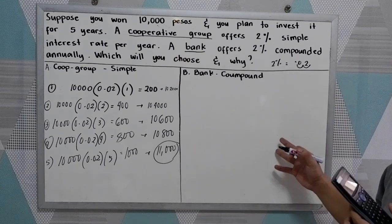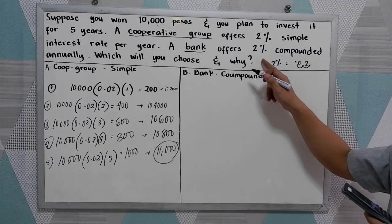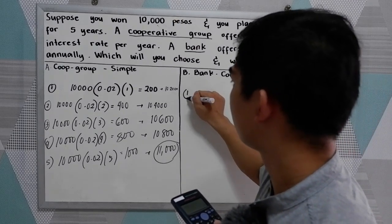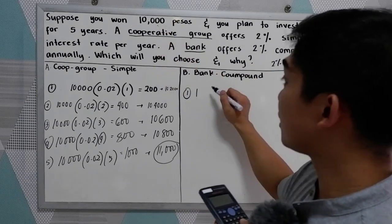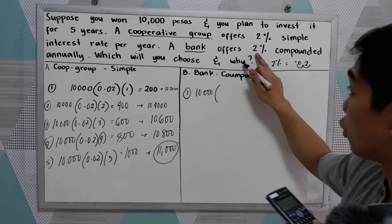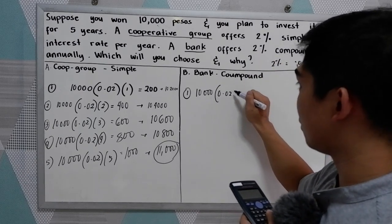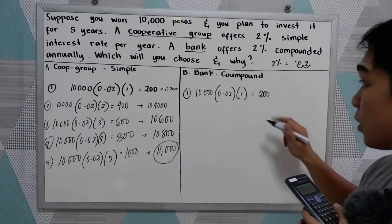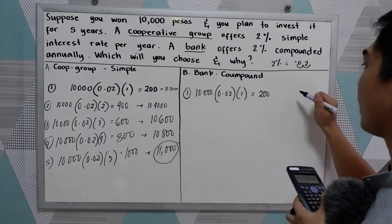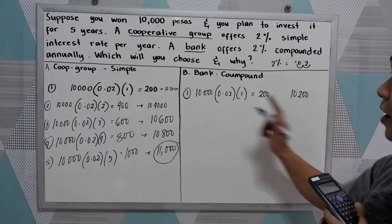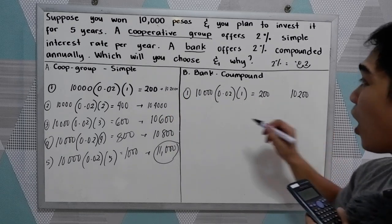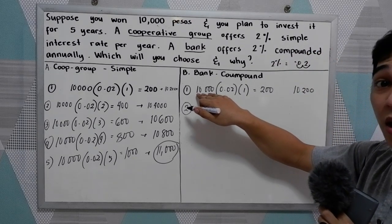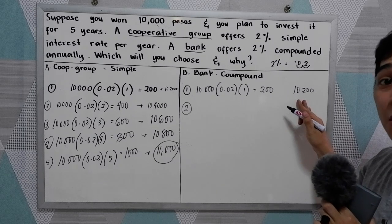Now let's compare using the bank's 2% compounded annually. On the first year, we have the principal 10,000 × 0.02 × 1. The interest is 200 pesos, so 200 + 10,000 = 10,200. They are the same in the first year. On the second year with compound interest, instead of using 10,000 as the base, we use the accumulated money.